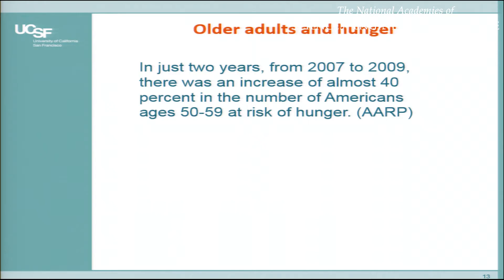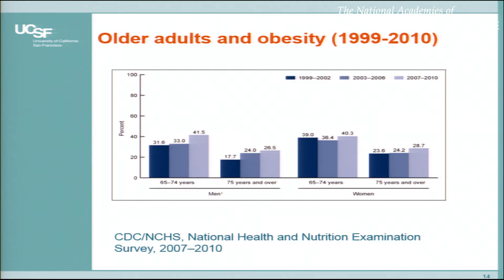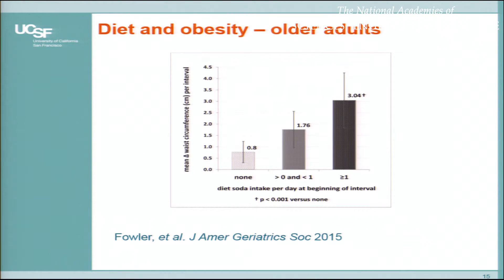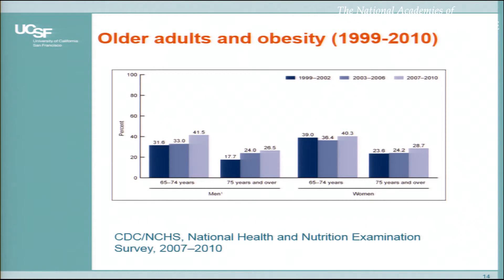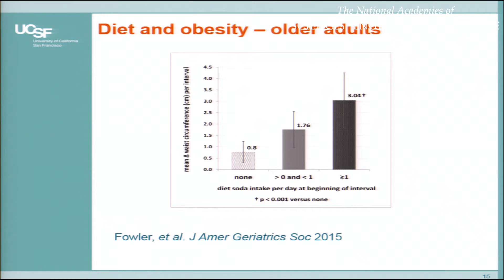So why do we care about this for older people? We are all aware that hunger in older people is a serious problem and that it's been on the increase. Other speakers have also made the point that we have a situation with older adults and obesity. This is data from the National Health and Nutrition Survey showing different age groups and how, from different years, there's an increased proportion of older people who are obese — both men and women. You probably know better than I do about how hunger and obesity can go together — that you can be hungry and obese — and that this could be an even more serious situation to address from a health and wellness point of view.